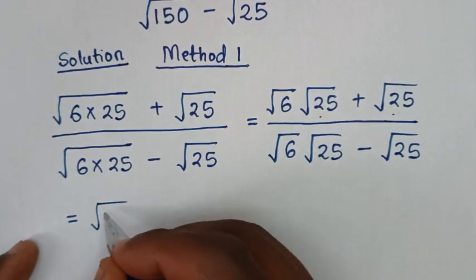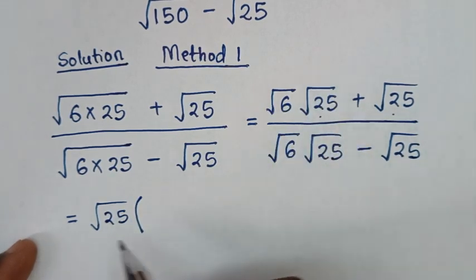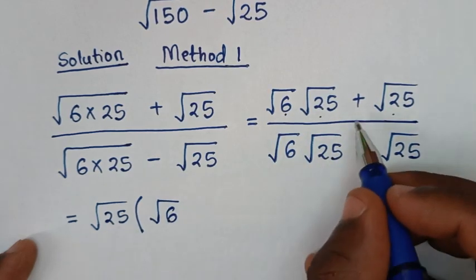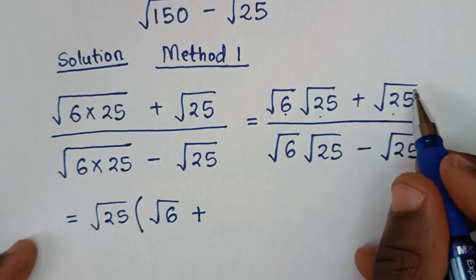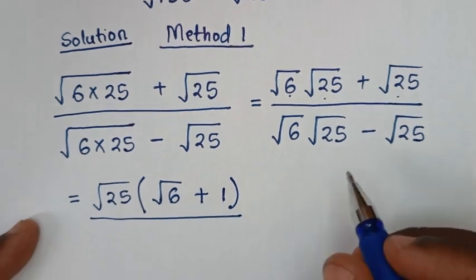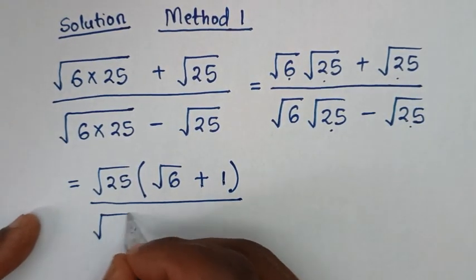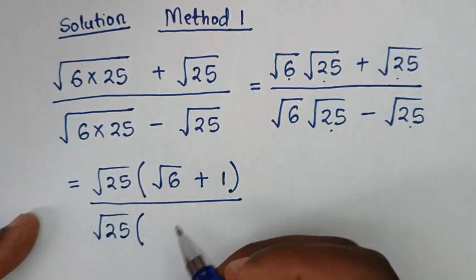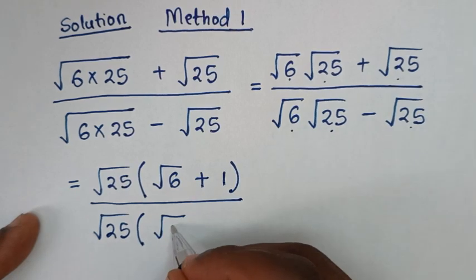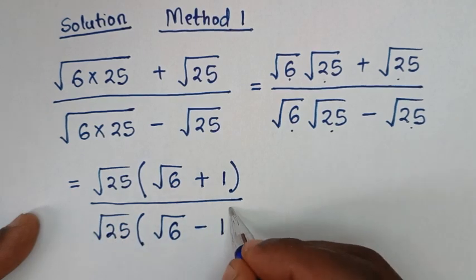So we factorize — we take out square root of 25 out of bracket. This here divided by square root of 25 is square root of 6, then plus this divided by this is 1, bracket. Then over, in the denominator, square root of 25 is common. So factorize — we take out square root of 25 out of bracket. This divided by square root of 25 is square root of 6, then minus 1, bracket.